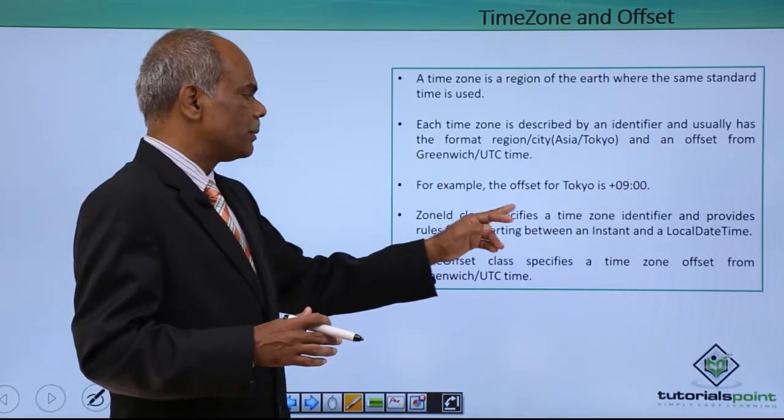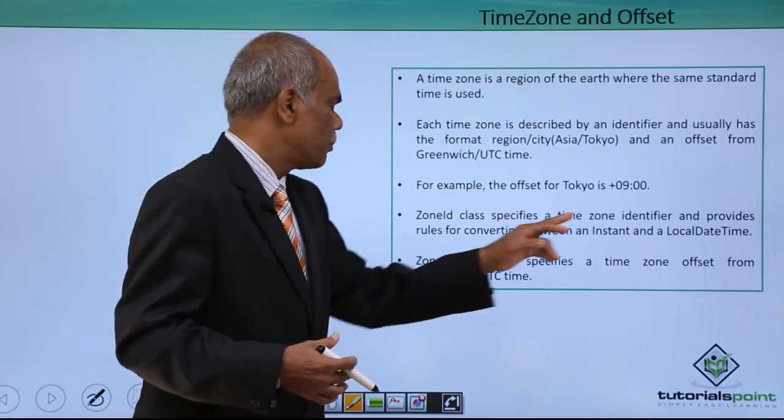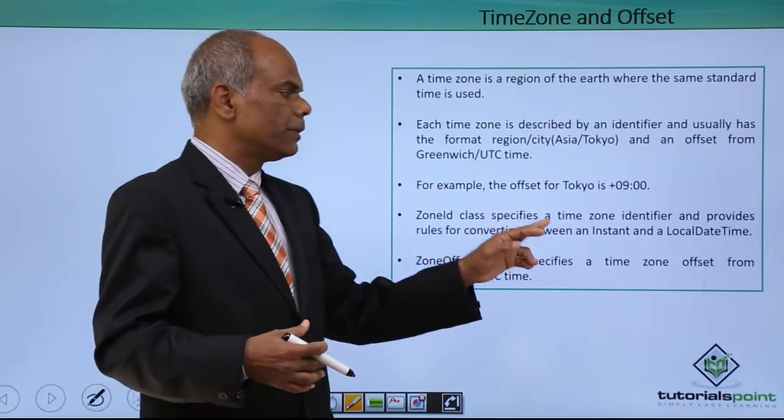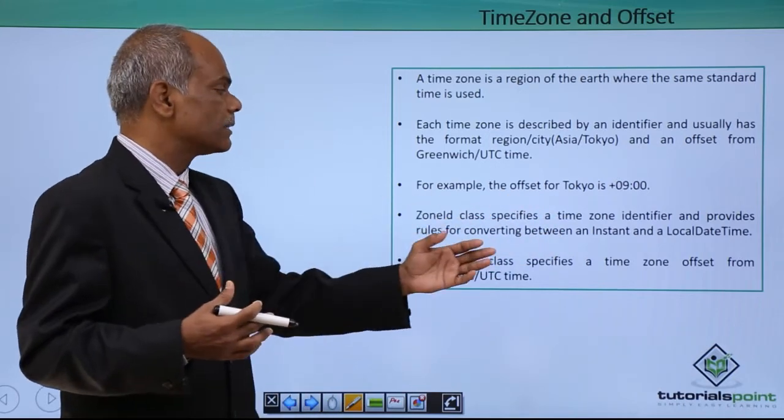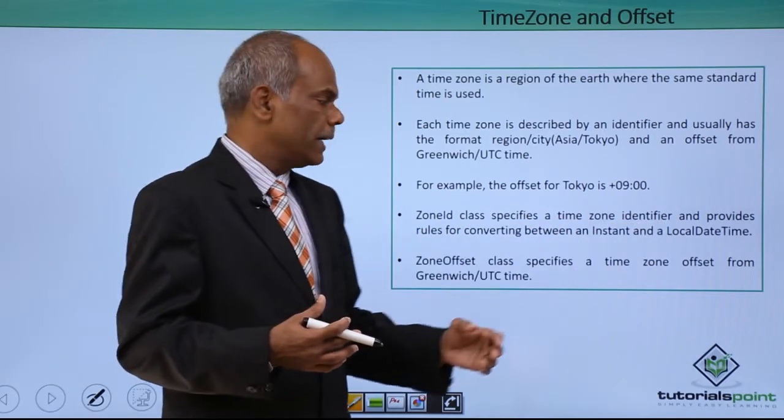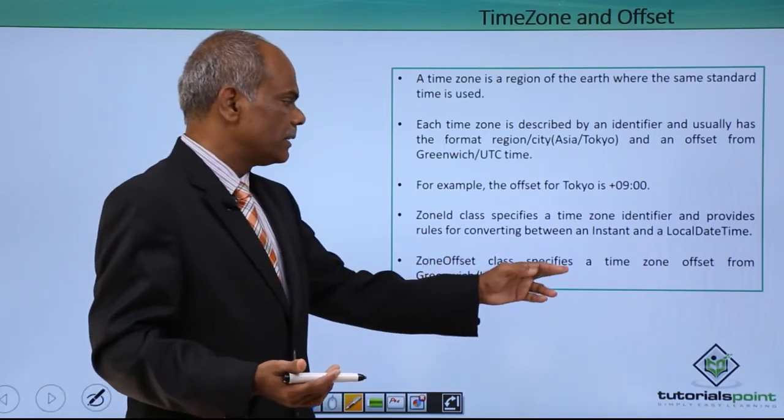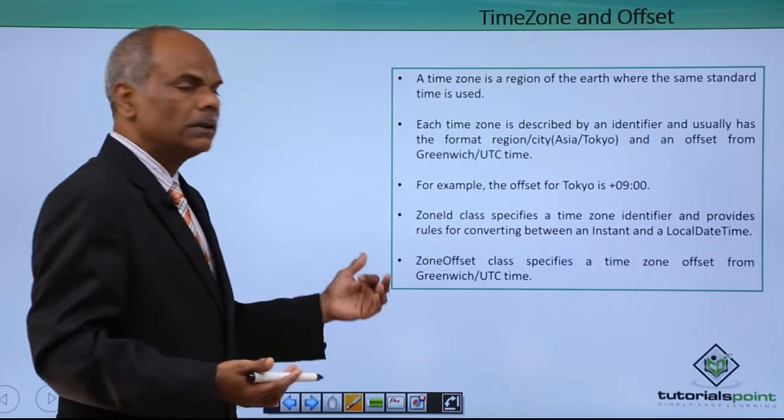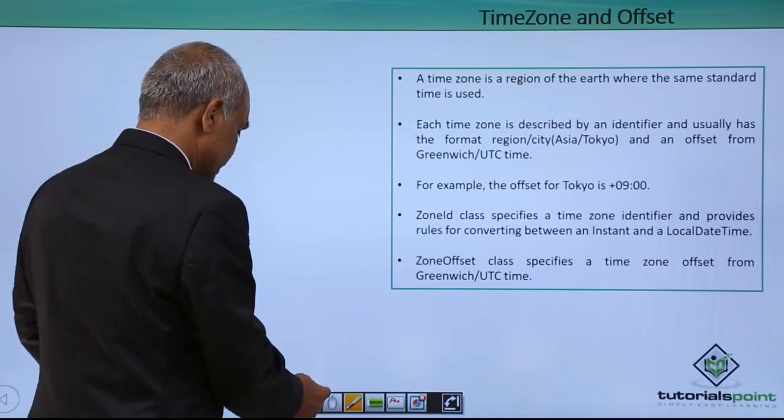ZoneID class specifies the time zone identifier and provides the rules for converting between the instant and local date time. For the conversion purpose, this ZoneID class can be used. ZoneOffset class on the other hand specifies the time zone offset from GMT and UTC. These are the two classes that are present.